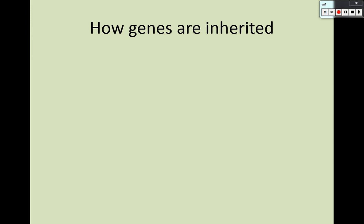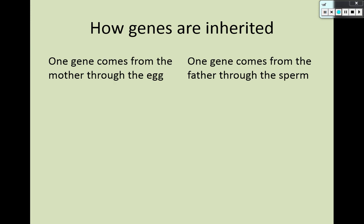I want to go with a brief overview of how genes are inherited. Some of this you already know, some of this you've kind of figured out, but I think it's good that we look at all of it just one quick time. Remember that every individual has two copies of each gene — one gene comes from the mother through the egg, and the other gene comes from the father through the sperm.